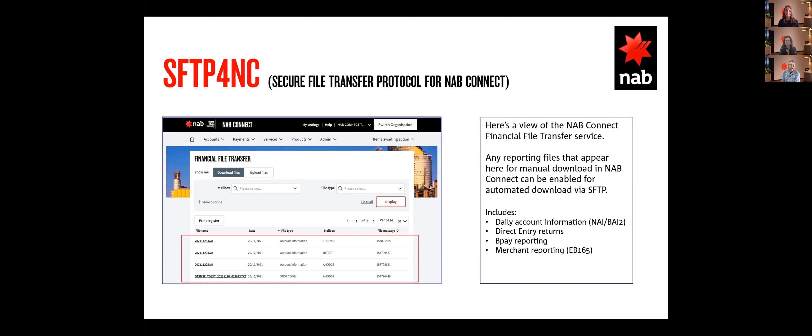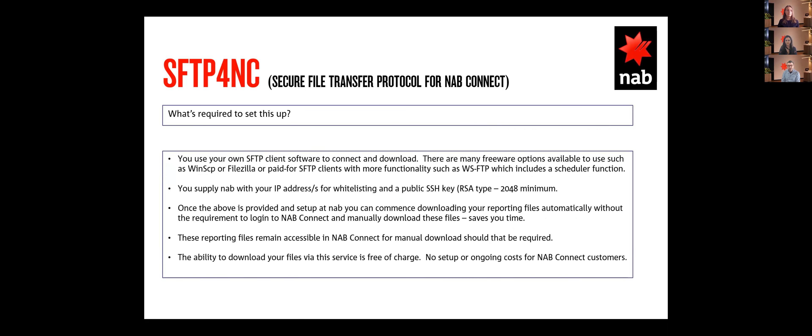The types of files we're talking about here include daily account information files, offered in NAI or BAI2 format; a Direct Entry Returns Report, which gives you an indication of returns from other institutions for your direct entry payments; BPAY Reporting, which is your BPAY Reconciliation Report for those who have BPAY as a receivables product; and Merchant Reporting or FPAS Terminal Reporting, known as EB165. That's just a sample of the types of reports you can get via SFTP for NAB Connect. These files remain available in your NAB Connect instance for manual downloading going forward if that's needed.